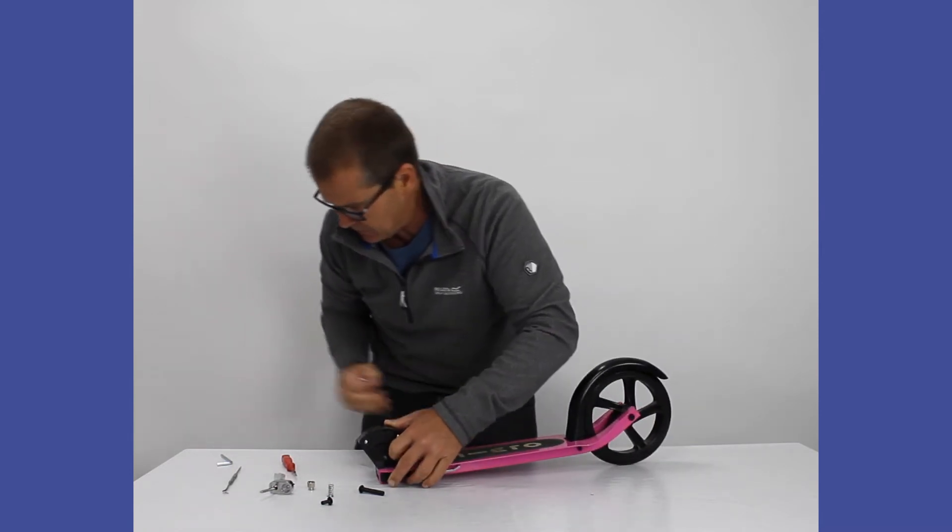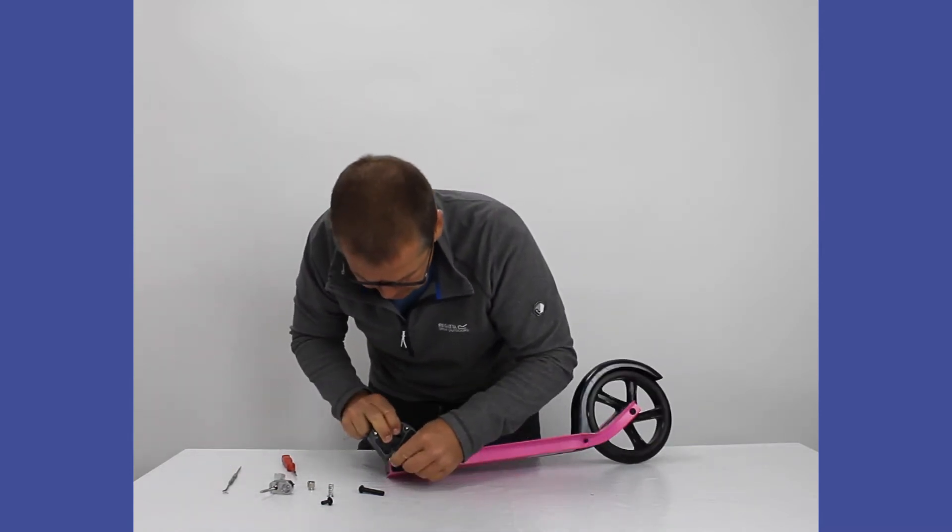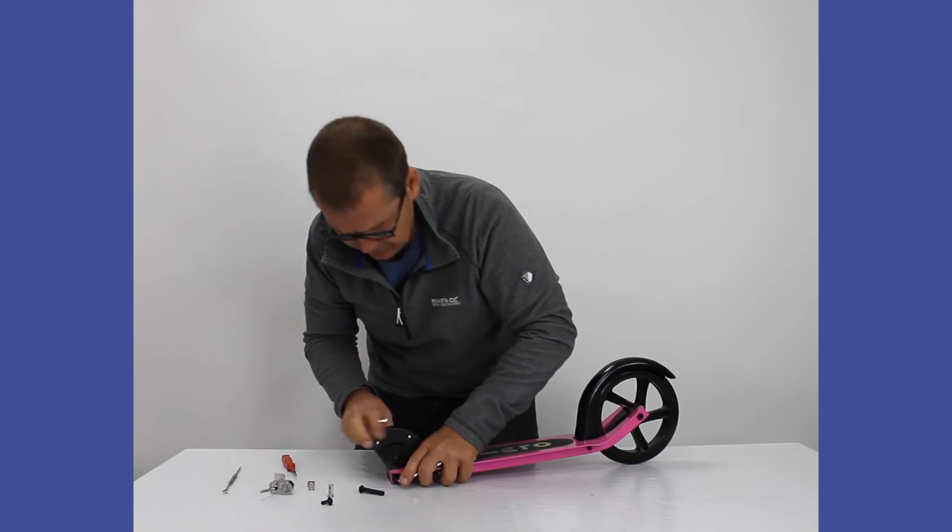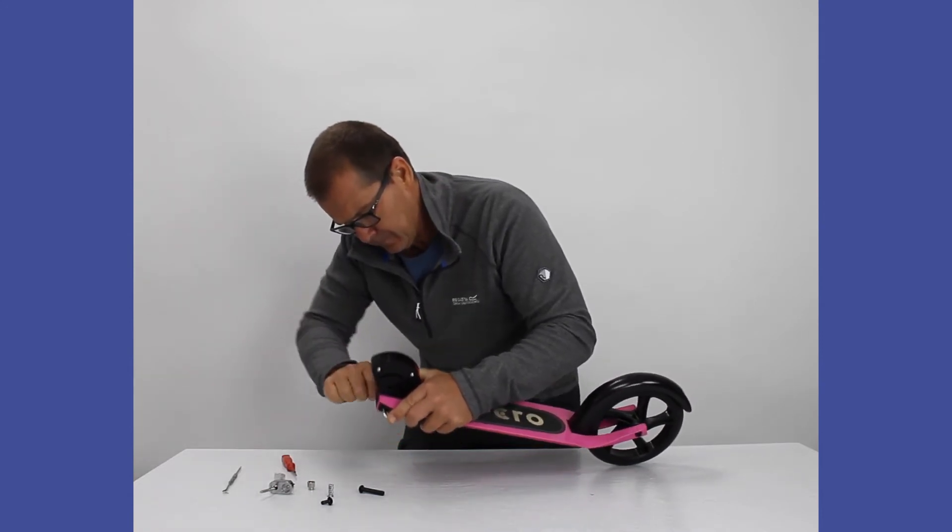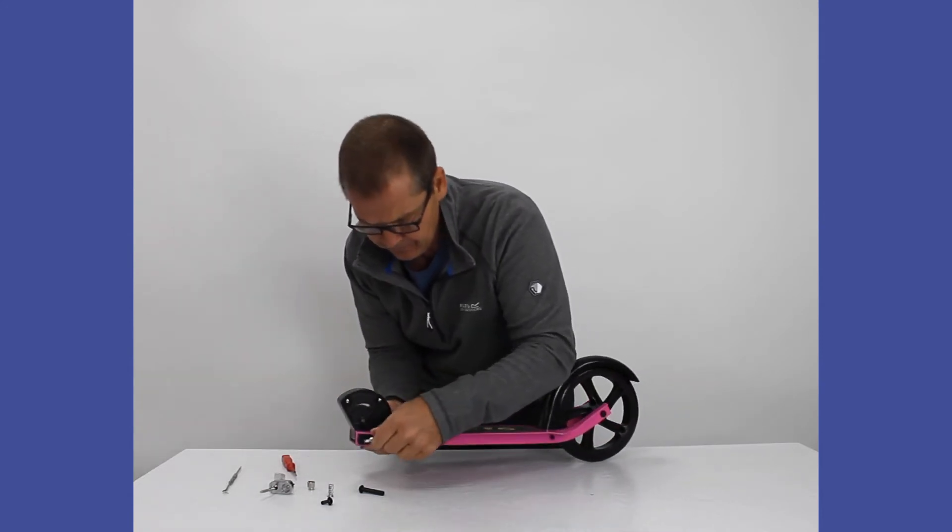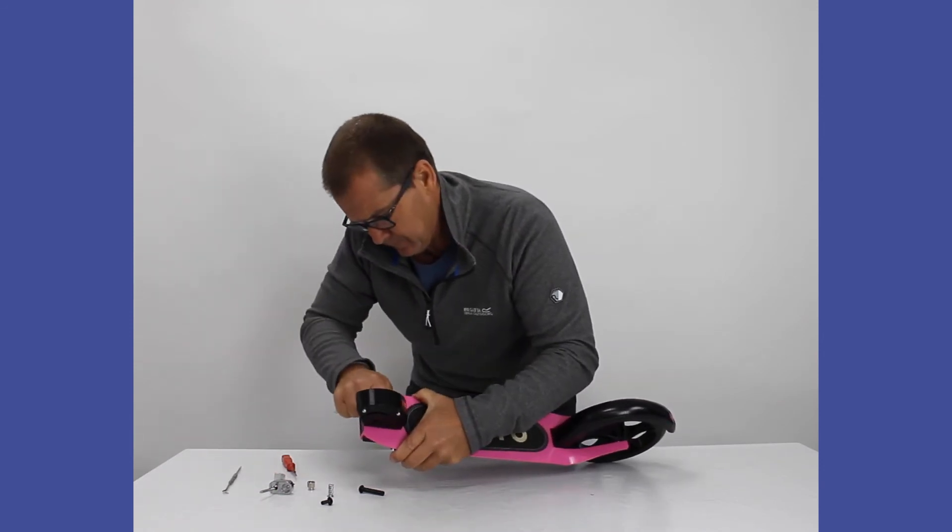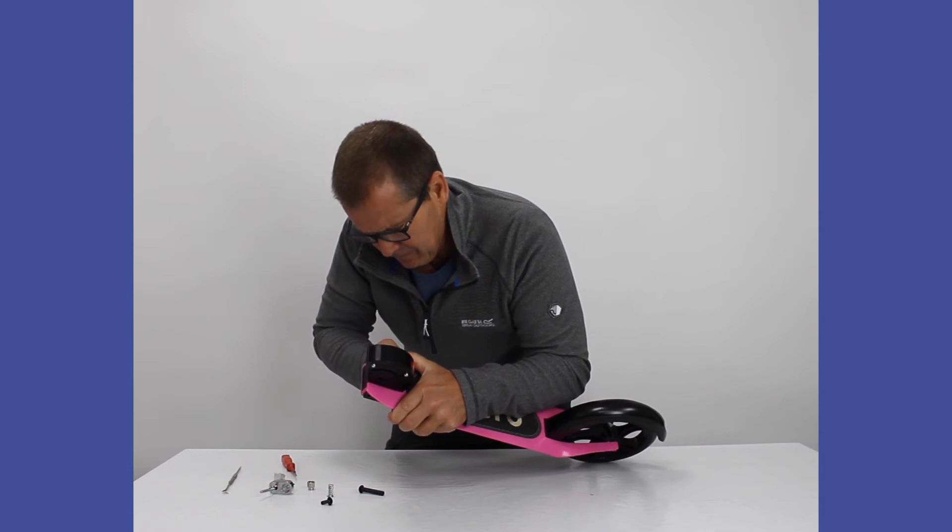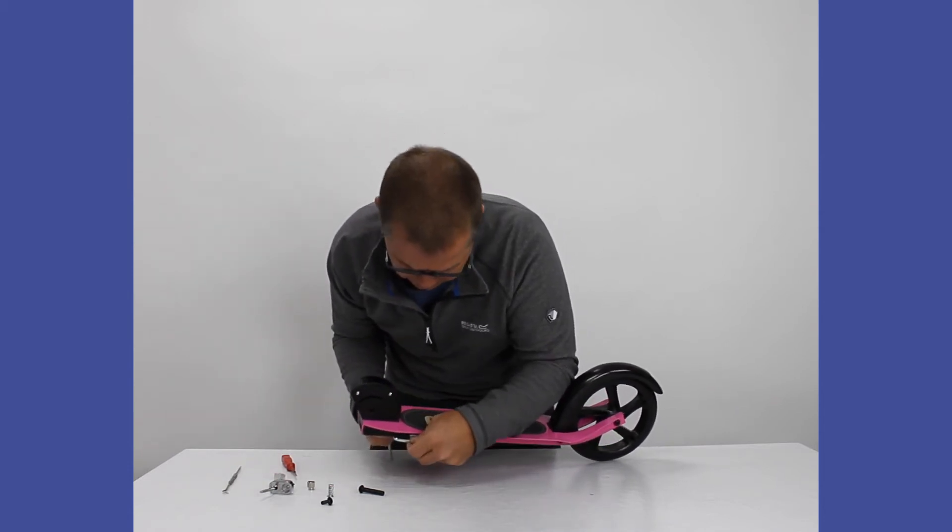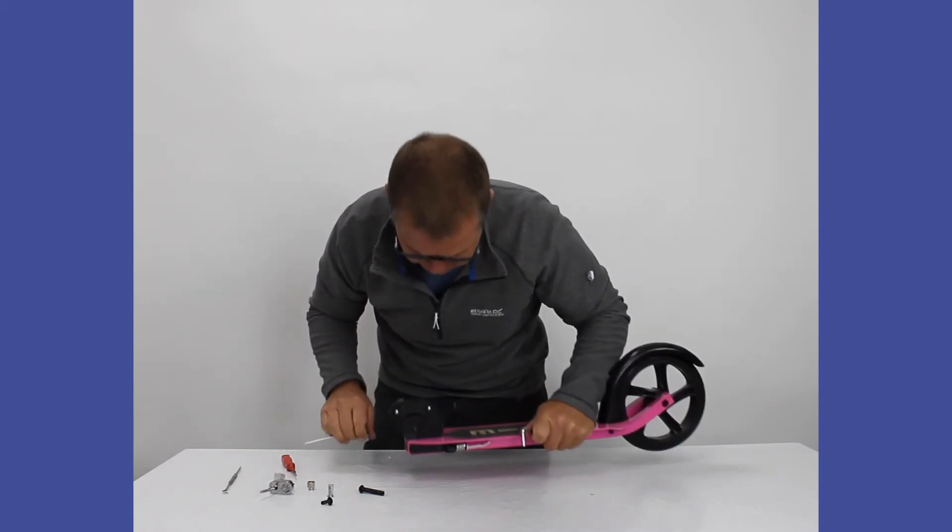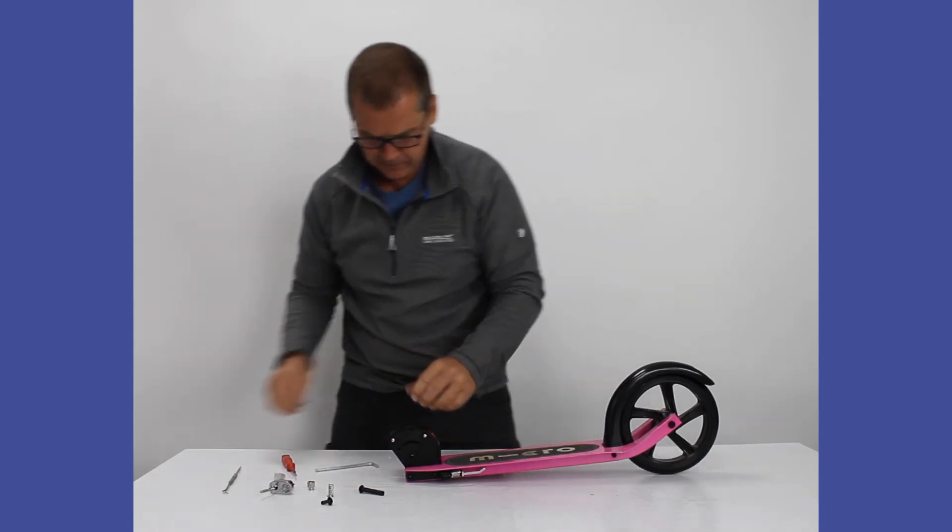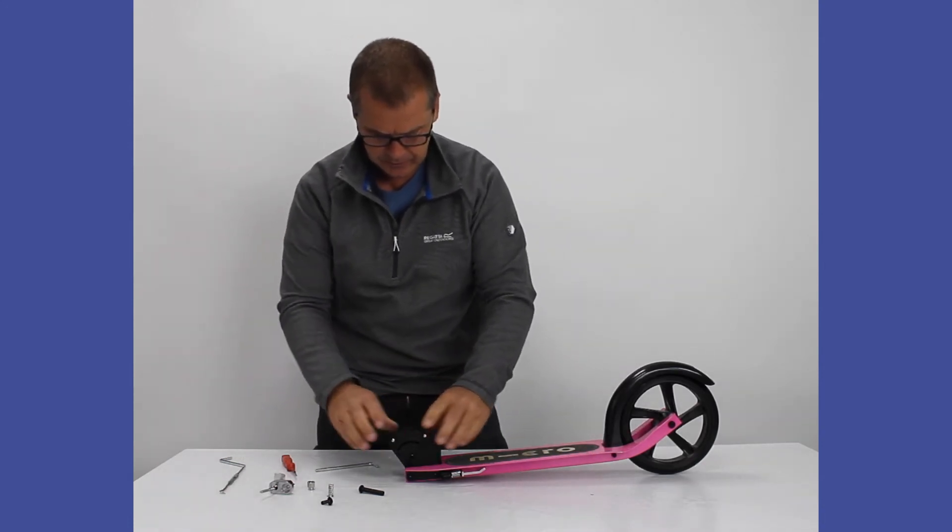And then with the other, we just start them off, just hold them to make sure that we can do it on the tie. There you are, then we've got our folding block attached to the deck.